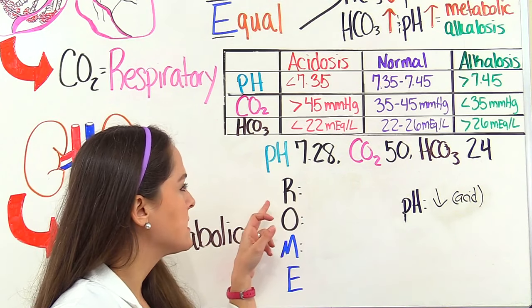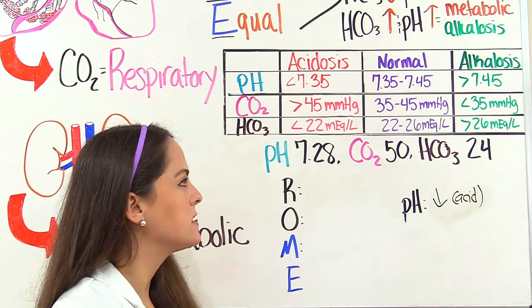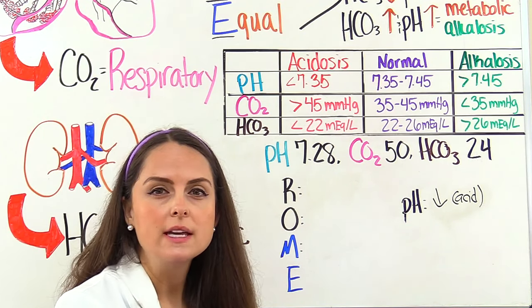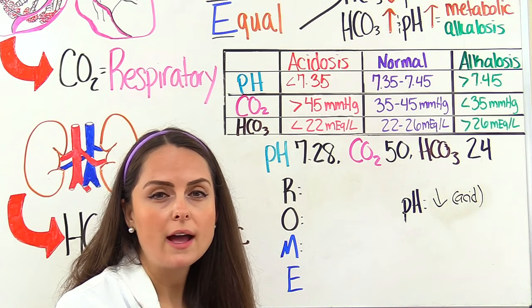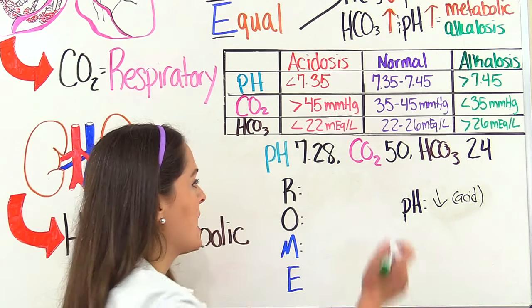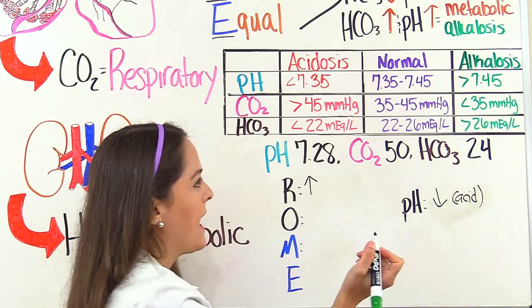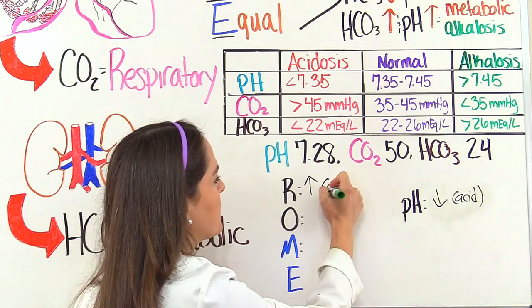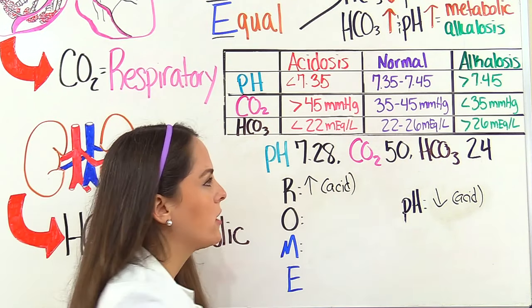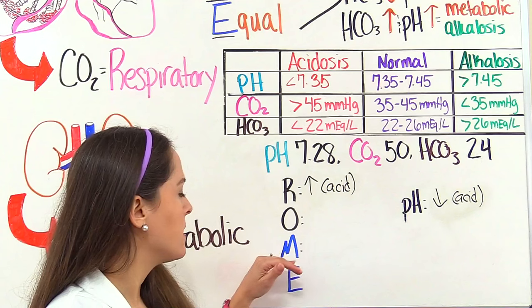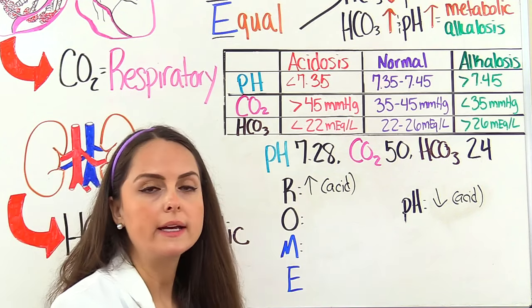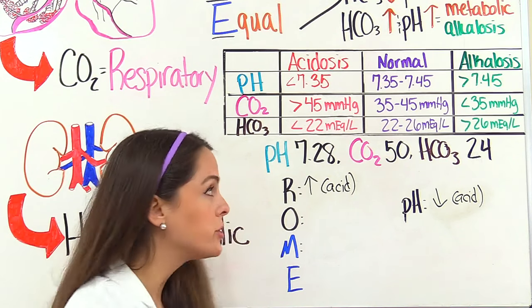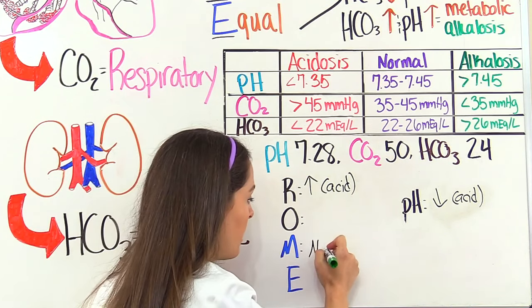Looking at the respiratory system, represented by CO2, it's 50. Normal CO2 is 35 to 45, so we're elevated and acidotic. Then our bicarb is 24. Normal is 22 to 26, so we're actually normal with our metabolic level.